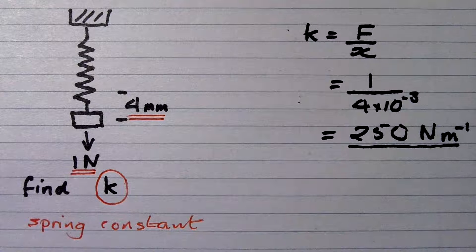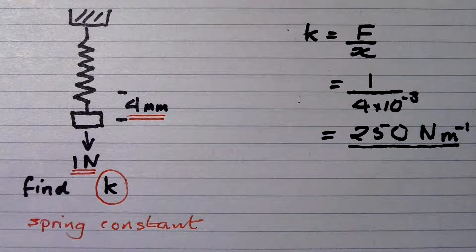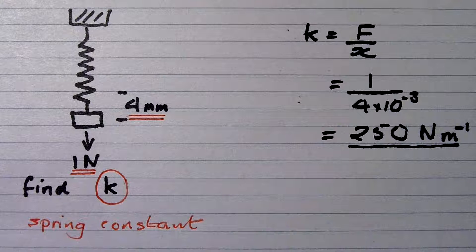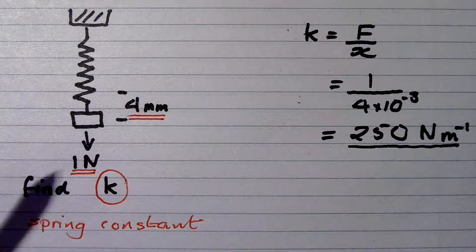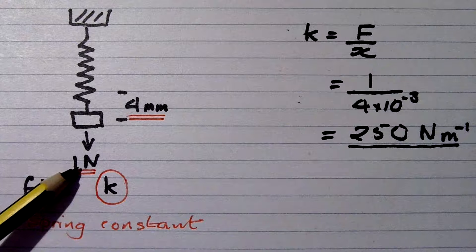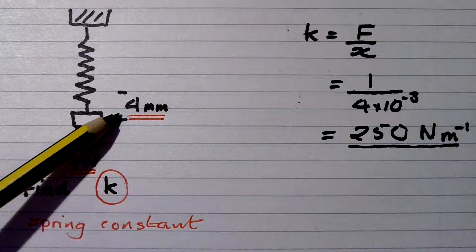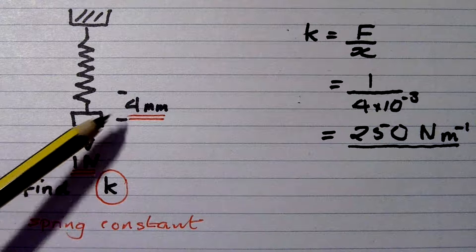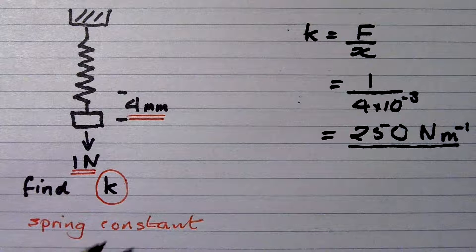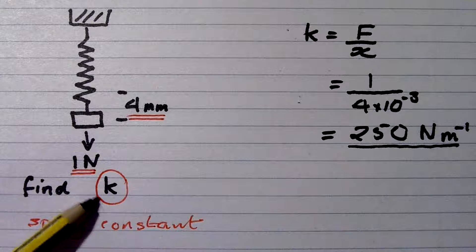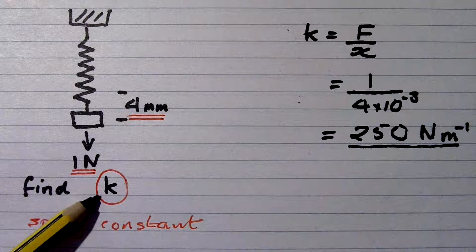So let's have a look at this very typical GCSE physics question. We've got a weight of 1 newton hanging on a spring and it extends by 4 millimetres. And the question asks us to find the spring constant, normally, well, always written as k.